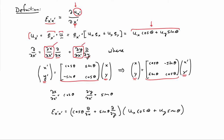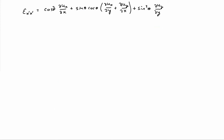Now I can combine the results. I have cosine theta times the derivative with respect to x, plus sine theta times the derivative with respect to y, acting on u_x cosine theta plus u_y sine theta. Multiplying this all out — using the FOIL rule from elementary algebra — I end up with: cosine squared theta times the derivative of u_x with respect to x, plus sine theta cosine theta times the sum of the mixed partial derivatives, plus sine squared theta times the derivative of u_y with respect to y.